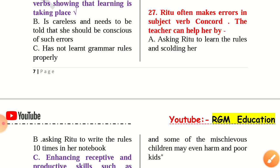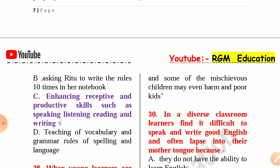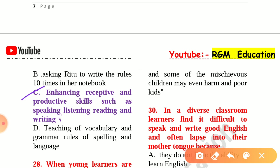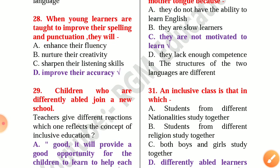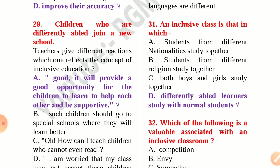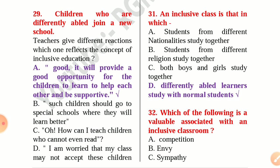Number 27: Ritu often makes errors in subject-verb concord. The teacher can help her by enhancing receptive and productive skills such as speaking, listening, reading and writing. Question 28: When young learners are taught to improve their spelling and punctuation, they will improve their accuracy. Question 29: Children who are differently abled join a new school — the reaction reflecting inclusive education is that it will provide a good opportunity for children to learn to help each other and be supportive.